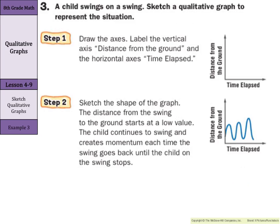What about a child on a swing? We have time elapsed and distance from the ground. The distance from the ground starts at a low value, then they swing up backwards and are high off the ground, come back closer to the ground, then far from the ground, then closer, then even further up. The lowest points stay about the same, but as they keep swinging they get a little bit higher and higher until the swing stops.